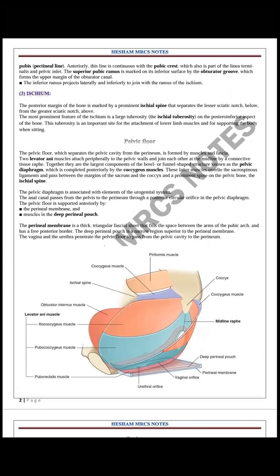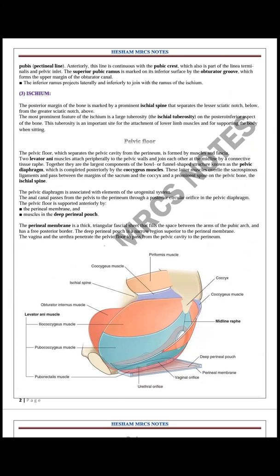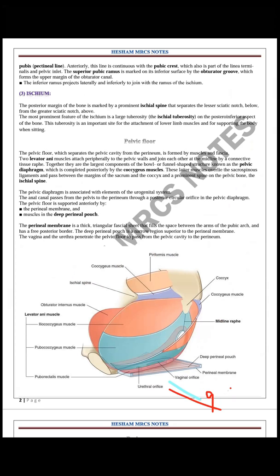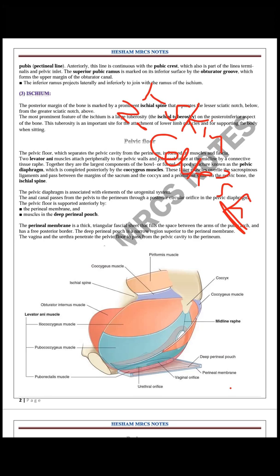The pelvic floor separates the pelvic cavity from the perineum. Above is the pelvic cavity and downward is the perineum. The layers from skin to peritoneum, in a patient sitting in the lithotomy position, start with skin, then Colles' fascia, which is an extension of the superficial fascia of the abdomen downward over the perineum.